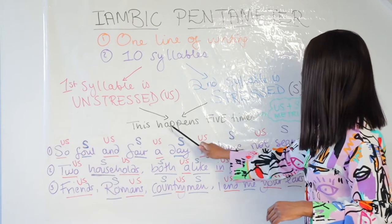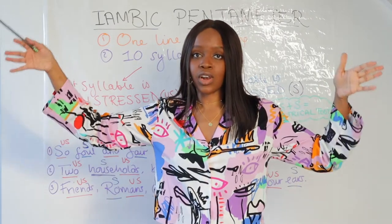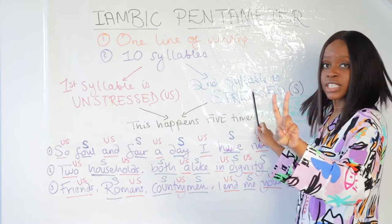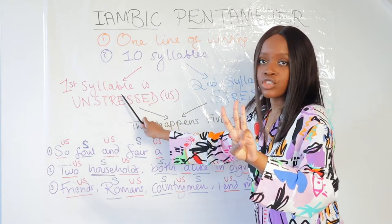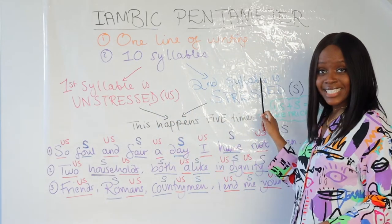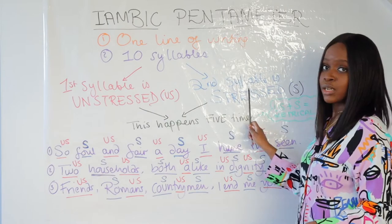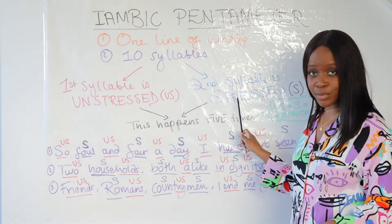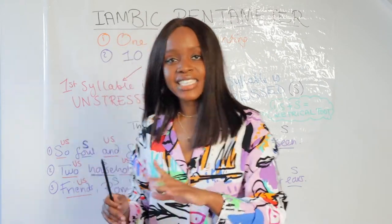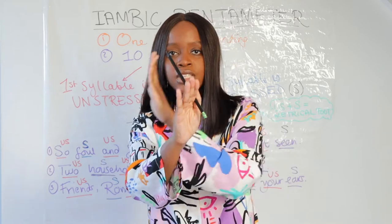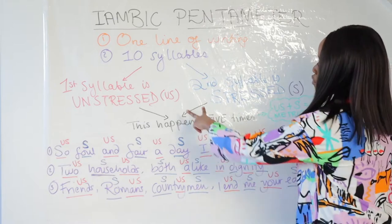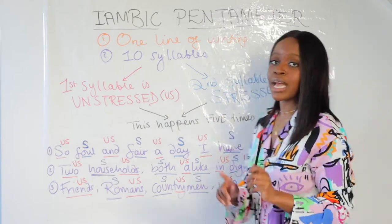As I mentioned, you will have one unstressed syllable followed by a stressed syllable, and this happens five times in a line of verse. In other words, you have unstressed, stressed, unstressed, stressed, unstressed, stressed, unstressed, stressed, unstressed, stressed — giving you 10 syllables total in one line. The first is unstressed, second is stressed, third unstressed, fourth stressed, and so on.